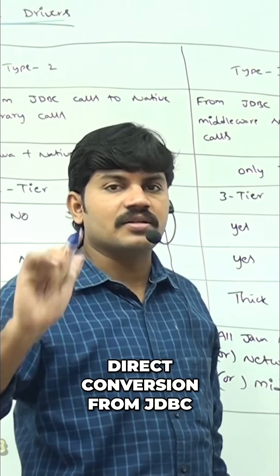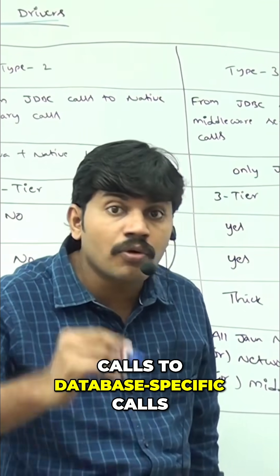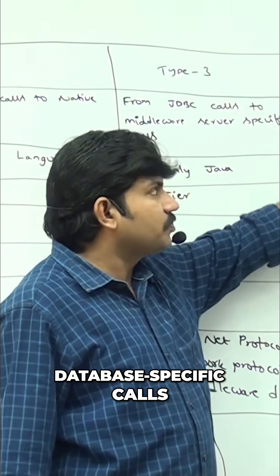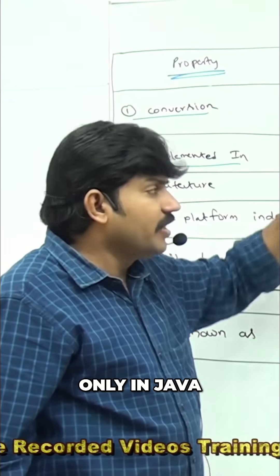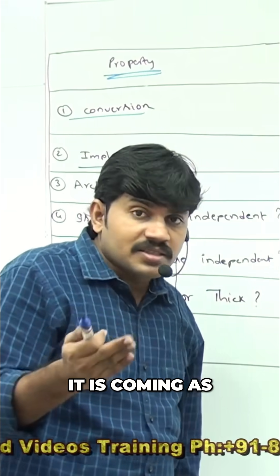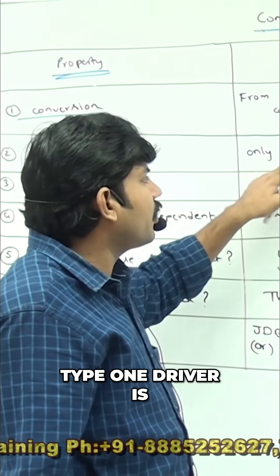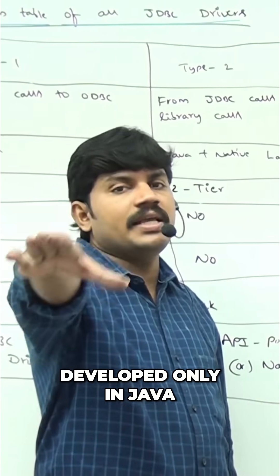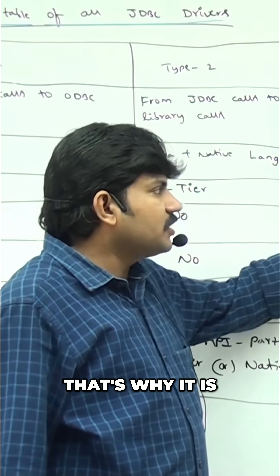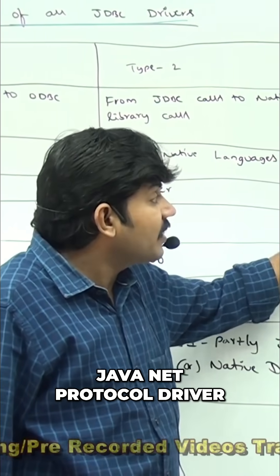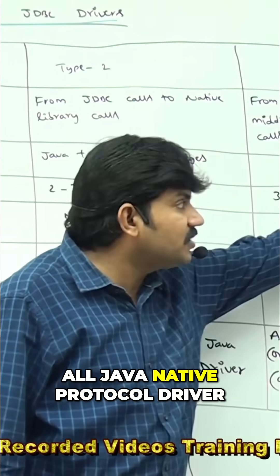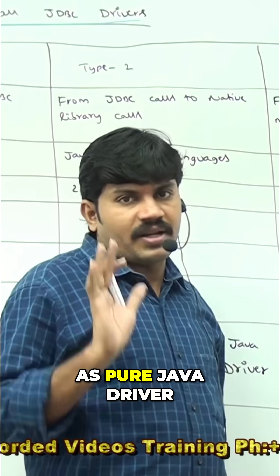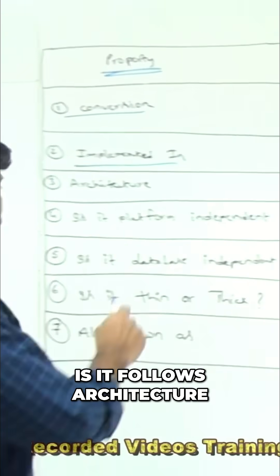Type 4 driver does a direct conversion from JDBC calls to database-specific calls. Type 4 is developed only in Java, which is why it is also known as the all-Java native protocol driver, or pure Java driver.